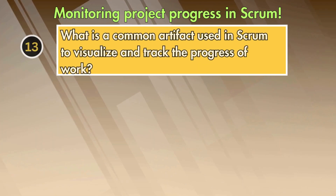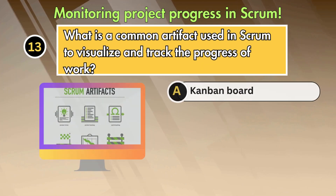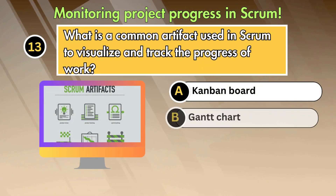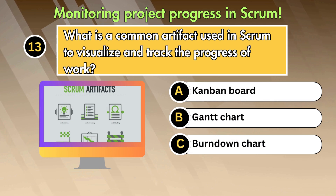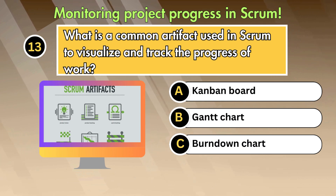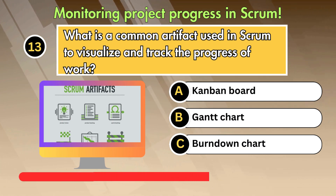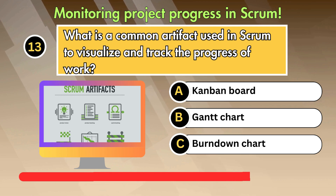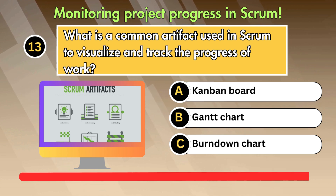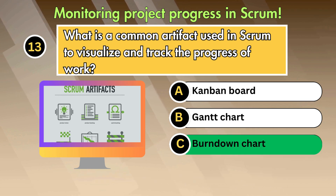What is a common artifact used in Scrum to visualize and track the progress of work? Option 1: Kanban board. Option 2: Gantt chart. Option 3: Burndown chart. Answer is Burndown chart.